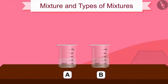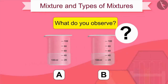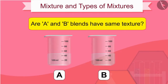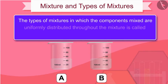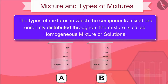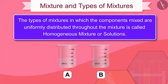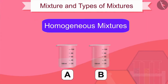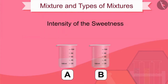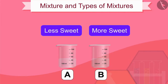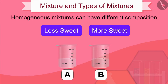Let us first look at the mixtures of beakers A and B. What do you observe? Are A and B blends of the same texture? Correct — the types of mixtures in which the components are uniformly distributed throughout are called homogeneous mixtures or solutions. Mixtures A and B are both homogeneous, but if we compare the sweetness of beakers A and B, we find they are different. As a result, we can see that homogeneous mixtures can have different compositions.